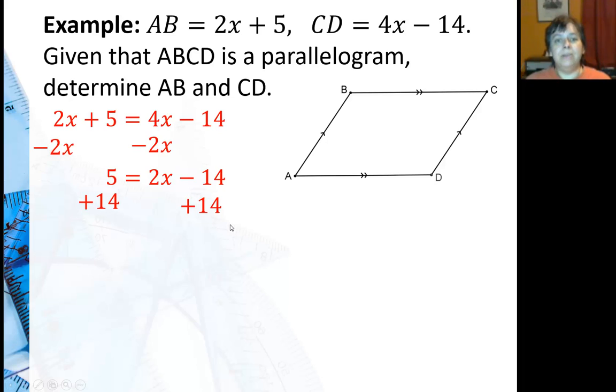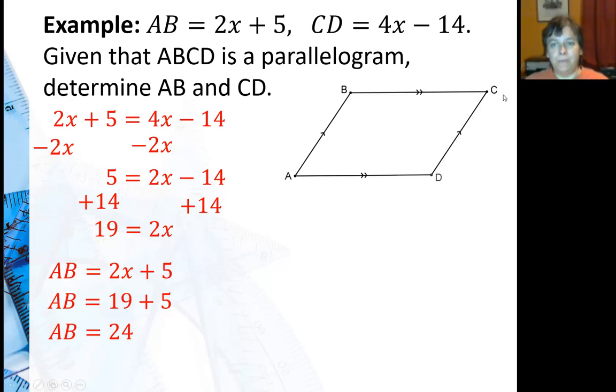And I get 2x is 19. Well I can find AB by substituting back into the 2x plus 5. You notice I didn't solve for x. I could have. I could say x is 9.5 and that would work fine. But I'm noticing that I only have even x's so, 2x is 19 so I'll just put 19 in there plus 5 so I get AB is 24. Well if AB is 24, the opposite side must also be 24.